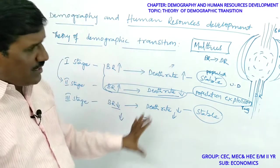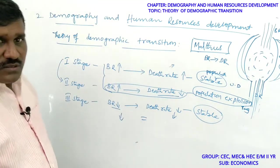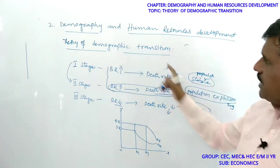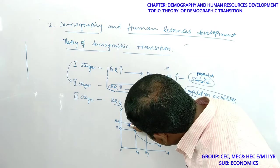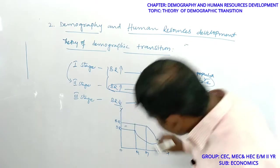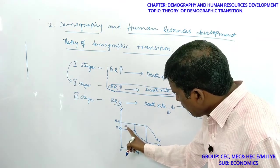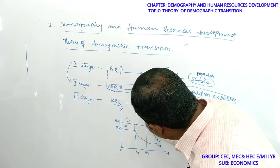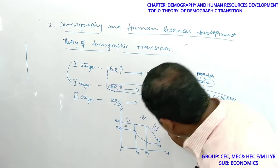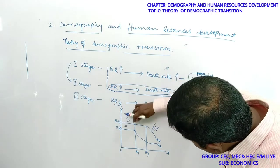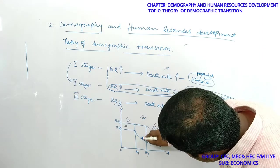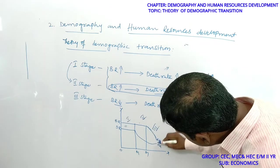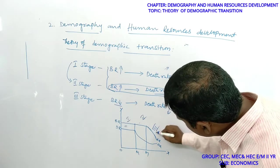This information can also be explained with a diagram. In the first stage, birth rate and death rate are both equal and high. In the second stage, birth rate remains the same as in the first stage but death rate declines. In the third stage, birth rate slowly decreases and death rate also decreases — both decline in the third stage.